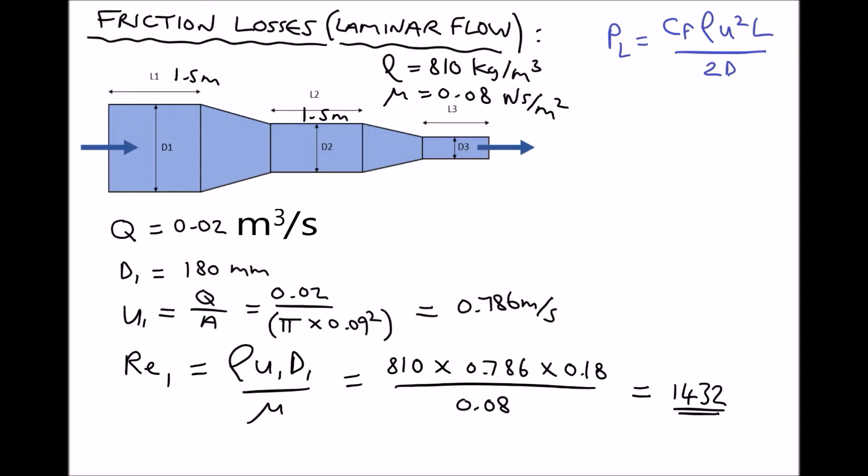So we know that we have laminar flow. Now it's at this point that it's useful to introduce something called the Moody diagram. Let's take a look at the Moody diagram, and then we can determine our friction factor and finally calculate our pressure loss.